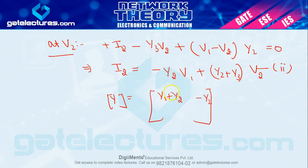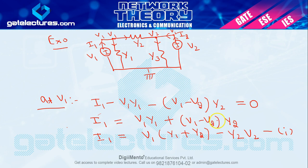Comparing with Y parameter equations: Y11 = Y1+Y2, Y12 = −Y2, Y21 = −Y2, Y22 = Y2+Y3. So the Y matrix for the pi network is: [Y1+Y2, −Y2; −Y2, Y2+Y3]. Just as the T network was important for Z parameters, the pi network is very important for Y parameters and directly affects many exam questions.